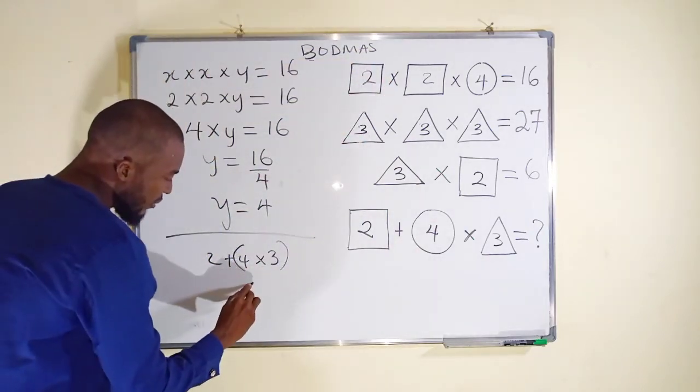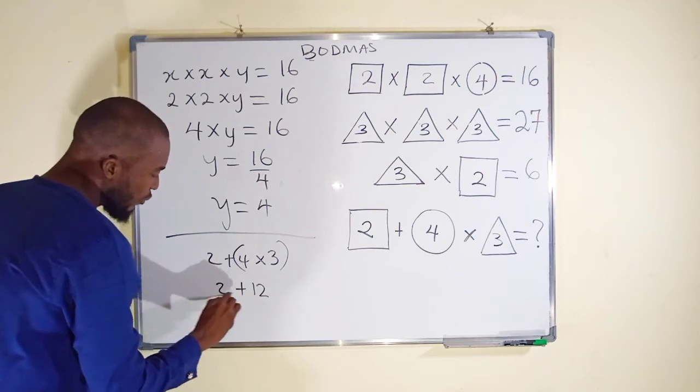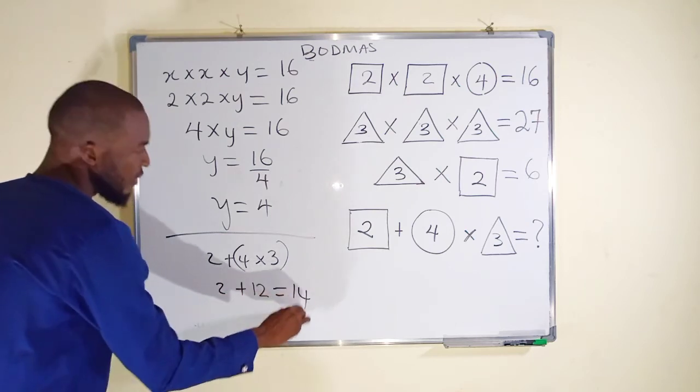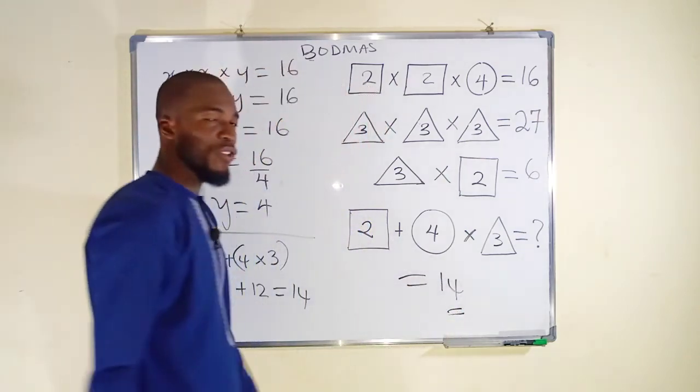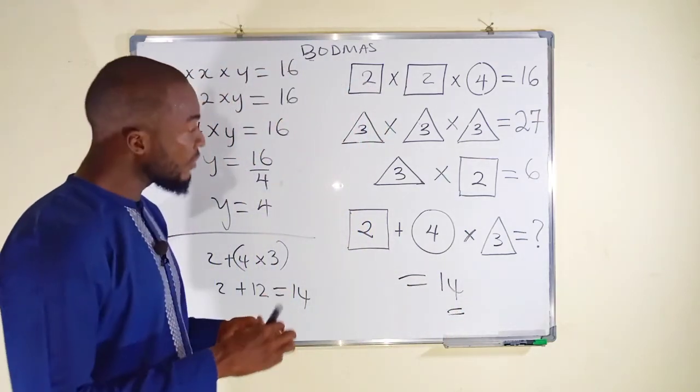So this time this is 12. You know we have plus 2 and this is equal to 14. So the whole, everything here is equal to 14. The last equation is equal to 14.